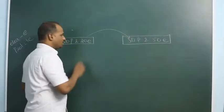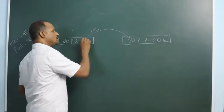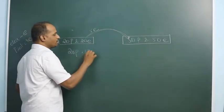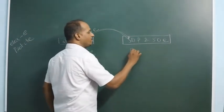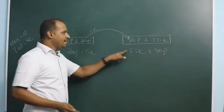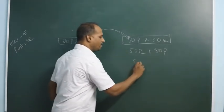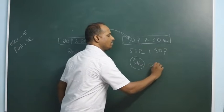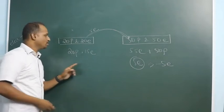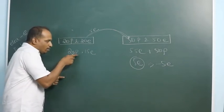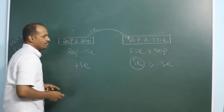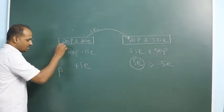Suppose 5 electrons jump from the first material to the second. The first side now has 20 protons with only 15 electrons, while the second side has 50 protons and 55 electrons. The second material gained 5 extra electrons so its charge is −5e. The first material lost 5 electrons — 5 protons are in excess — so its charge is +5e.